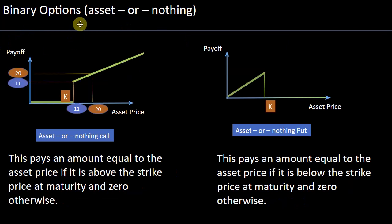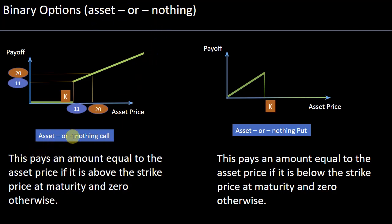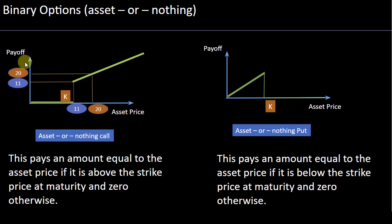Another type of binary option is called asset-or-nothing. As the name suggests, in an asset-or-nothing binary option the payoff is equivalent to the price of the underlying — the asset price — or nothing. For an asset-or-nothing call option, it pays an amount equal to the asset price if it's above the strike price at maturity, and zero otherwise. In this diagram, assume the strike price is $10.